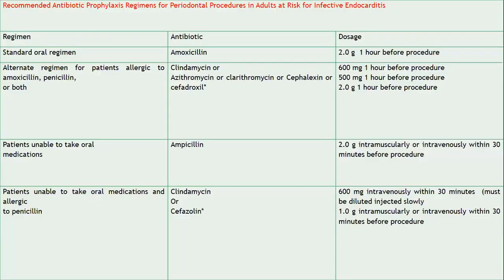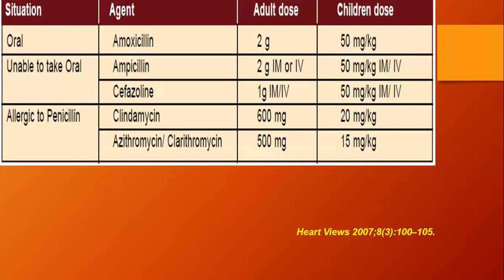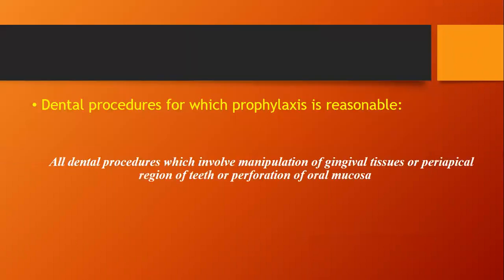The standard oral regimen is amoxicillin 2 grams, 1 hour before the procedure. If allergic to amoxicillin: clindamycin 600 mg one hour before, or azithromycin 500 mg one hour before, or any cephalosporin 2 grams one hour before. If unable to take oral medication: ampicillin 2 grams IM or IV within 30 minutes before the procedure. If penicillin-allergic parenterally: clindamycin 600 mg IV, or cefazolin 1 gram. Reference: Heart Views 2007 and Dajani 1997.